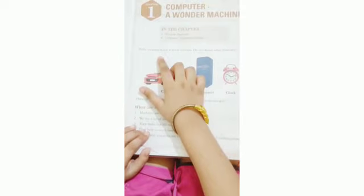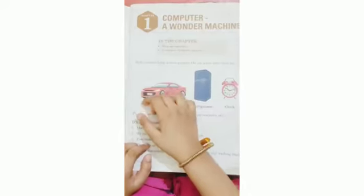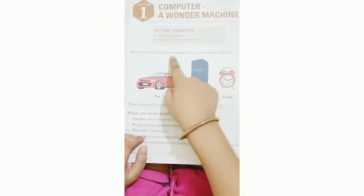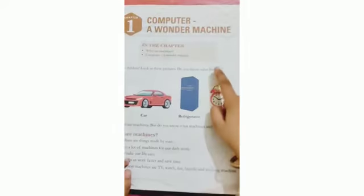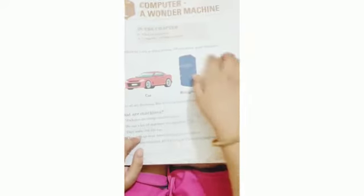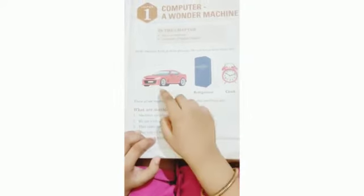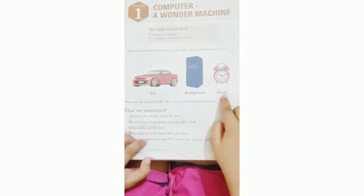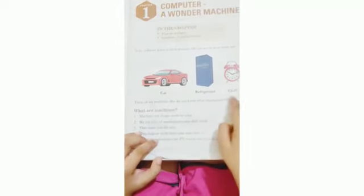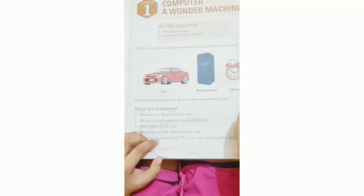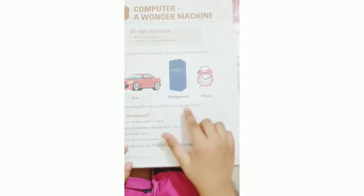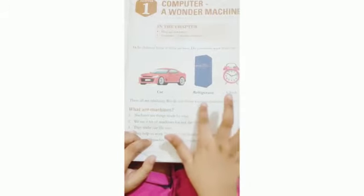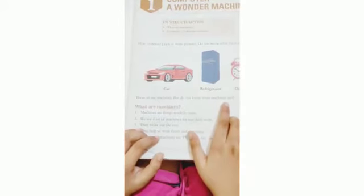I am going to drill. Hello children, look at the picture. Do you know what these are? ये बताएं इस पिच्चर में क्या है? ये कार है, ये फ्रीज है, ये क्लाक है. ये का हम लोगों ने देखा रही है, इसको हम लोग क्या कहते हैं? These are all our machines. But do you know what machines are? क्या आपको पता है कि machine का मतलब क्या होता है? Now let's see.